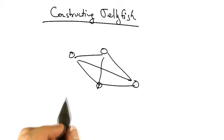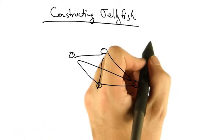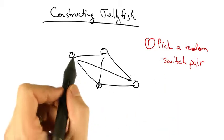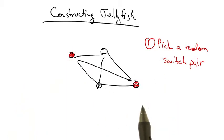To construct a jellyfish topology, one can simply take the following steps. First, pick a random switch pair with free ports that are not already neighbors.